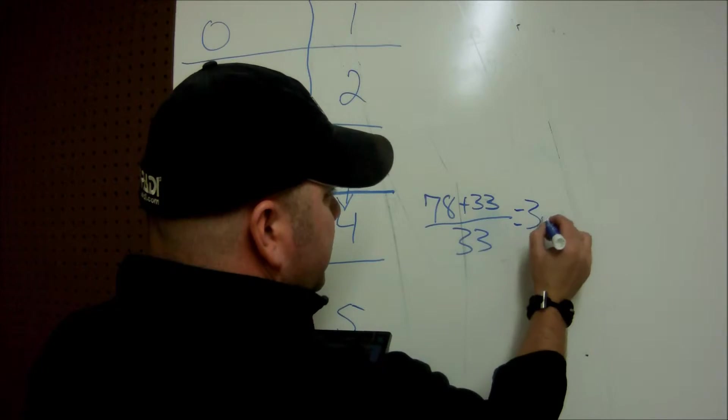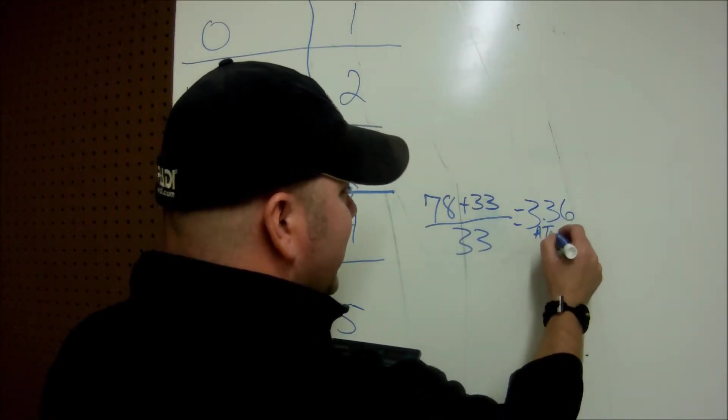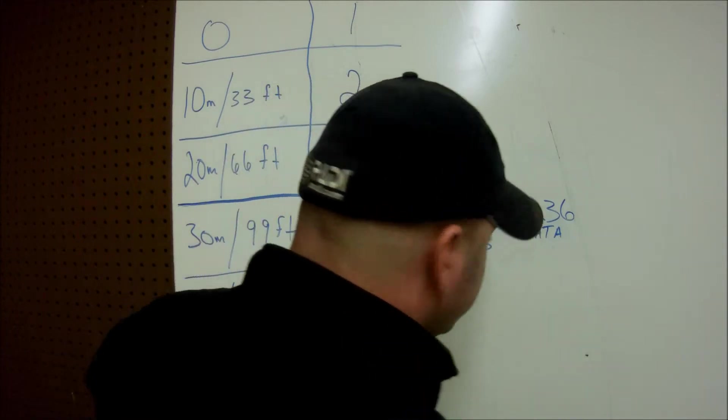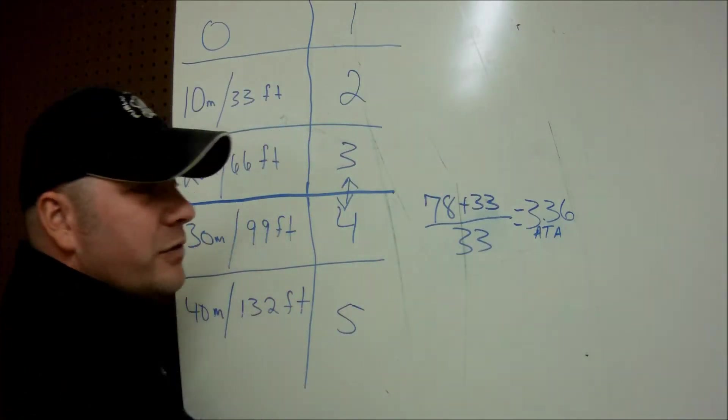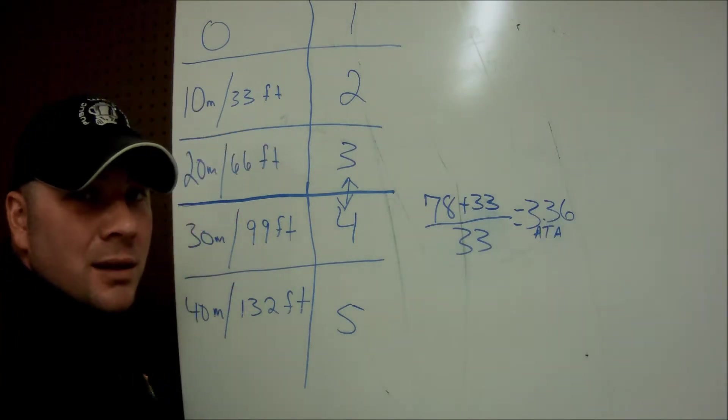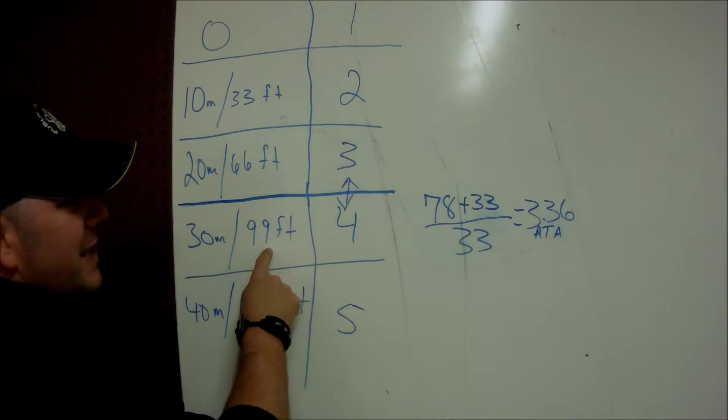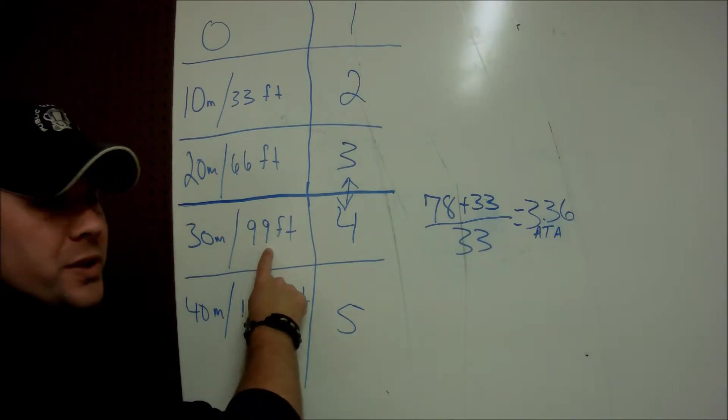So this calculation comes out 3.36, and it's what we call absolute atmosphere. So 78 feet of salt water is exactly 3.36 atmospheres. 78 falls somewhere between 66 and 99, but I need to know what the decimal is.